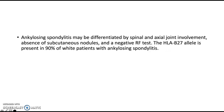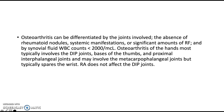Ankylosing spondylitis may be differentiated by spinal and axial joint involvement, absence of subcutaneous nodules, and a negative rheumatoid factor test; the HLA-B27 allele is present in 90% of patients with ankylosing spondylitis. Osteoarthritis can be differentiated by the joints involved, absence of rheumatoid nodules, systemic manifestations, or significant rheumatoid factor, and by synovial fluid white blood cell count of less than 2,000 per microliter. Osteoarthritis of the hands most typically involves the distal interphalangeal joints, bases of the thumbs, and proximal interphalangeal joints, whereas rheumatoid arthritis does not affect the distal interphalangeal joints.